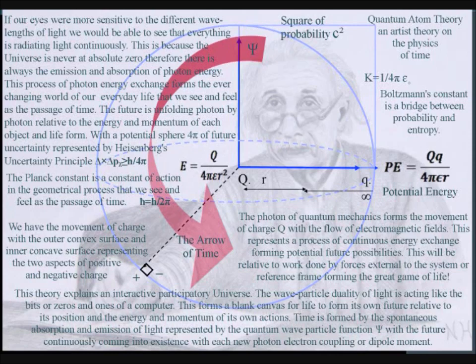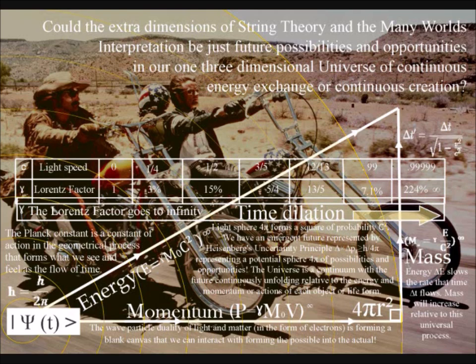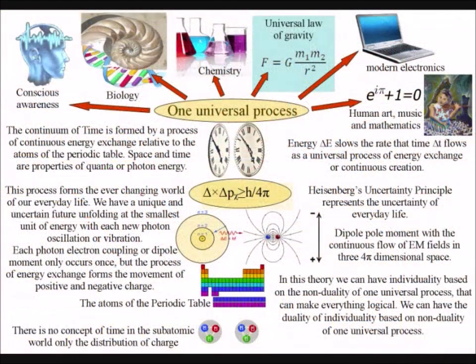In this theory we can have individuality based on the non-duality of one universal process. But we lose an important aspect of reality that can make everything logical if we just say everything is consciousness and then not try to explain how we can have the duality of individuality based on non-duality.